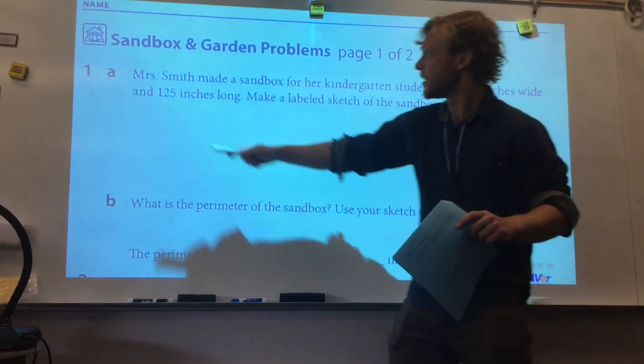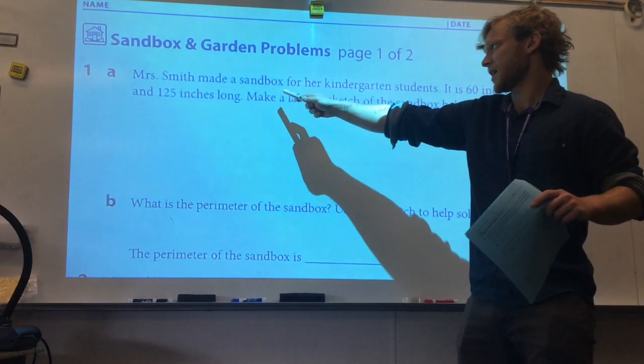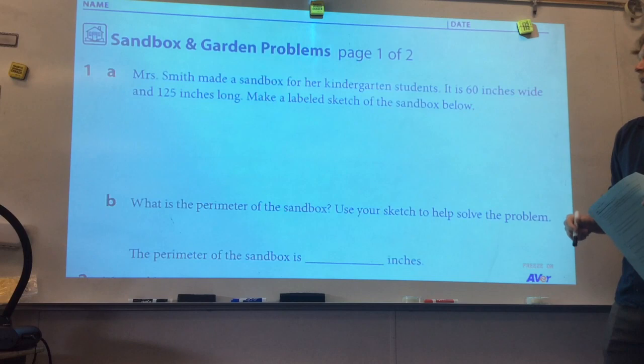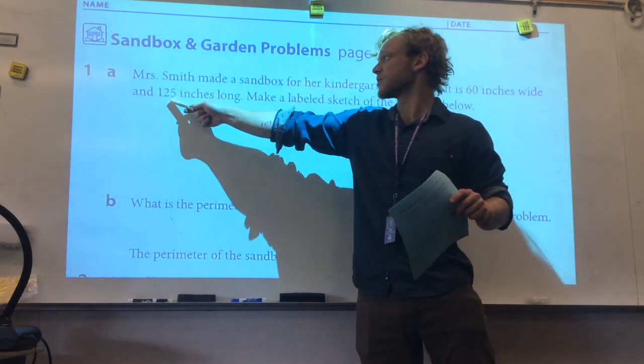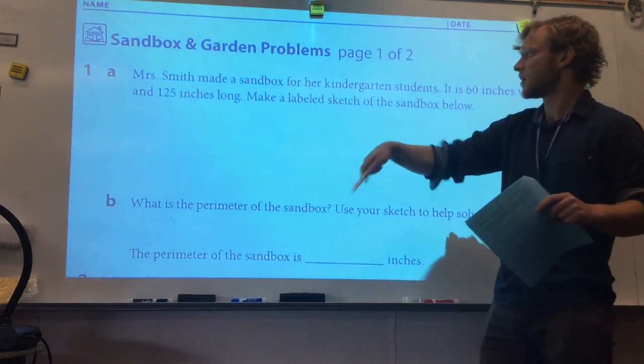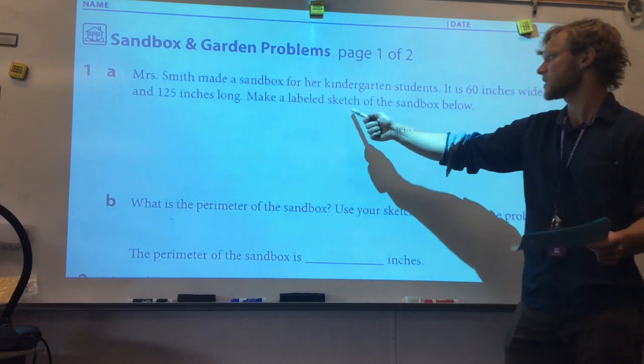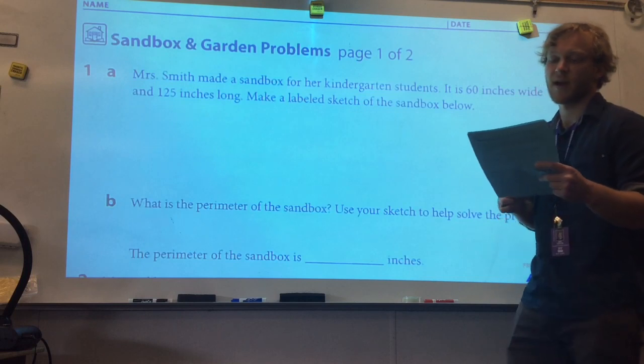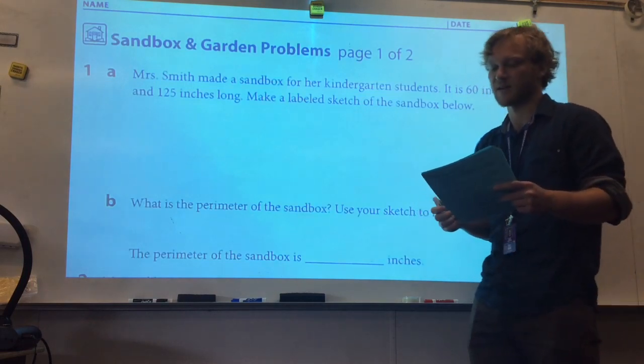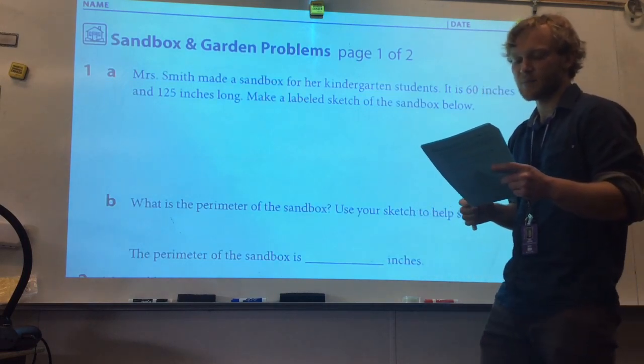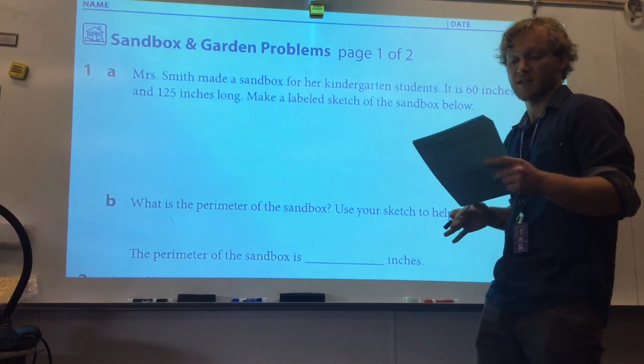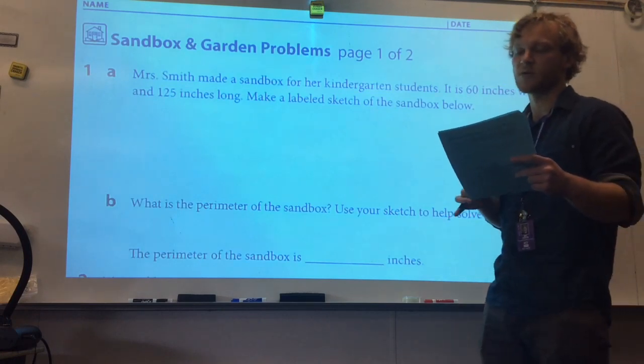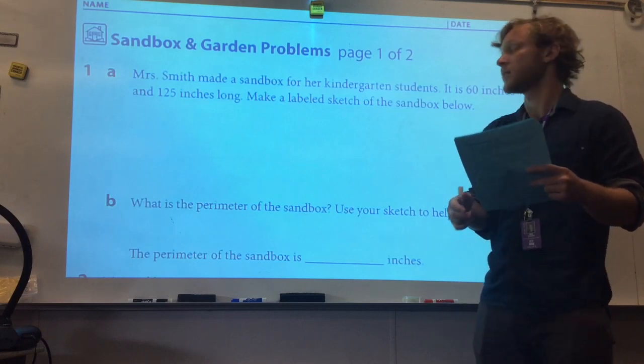Let's read question 1 together. Mrs. Smith made a sandbox for her kindergarten students. It is 60 inches wide and 125 inches long. Our first step: make a labeled sketch of the sandbox below. I'll read it to you in Spanish. La señora Smith hizo un aranero para sus estudiantes de kindergarten. Mide 60 pulgadas de ancho y 125 pulgadas de largo. Haz un dibujo con anotaciones del aranero de abajo.